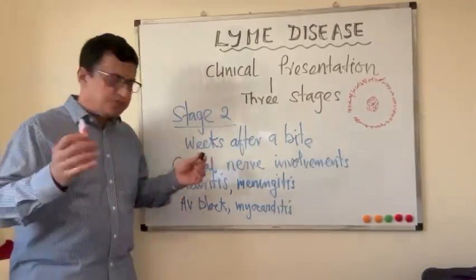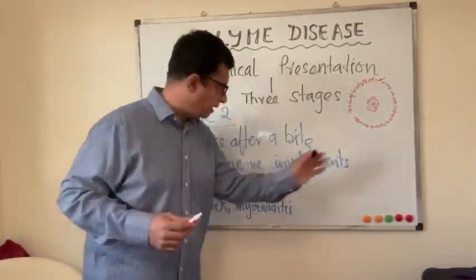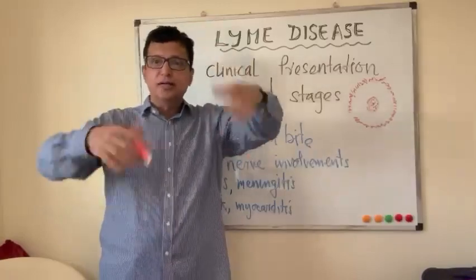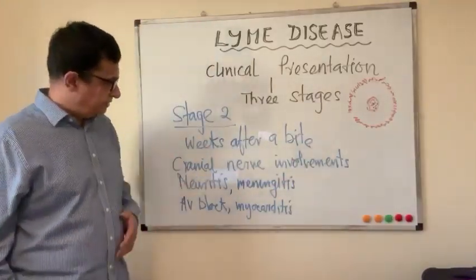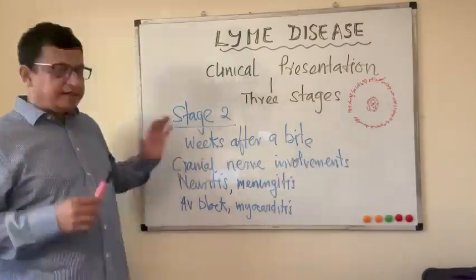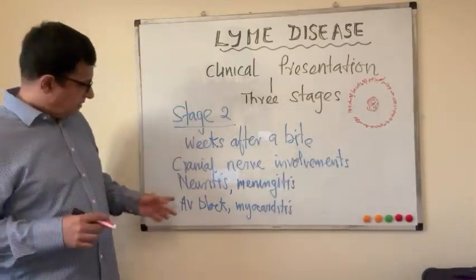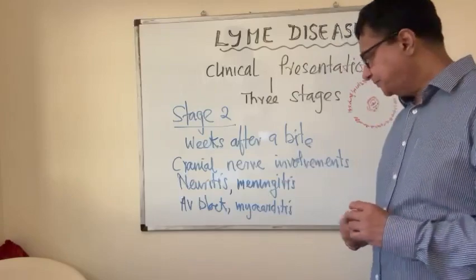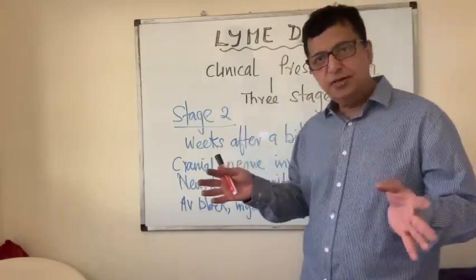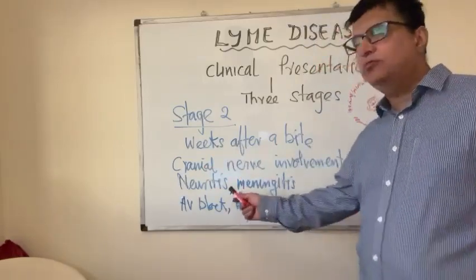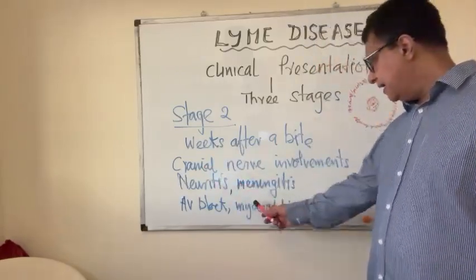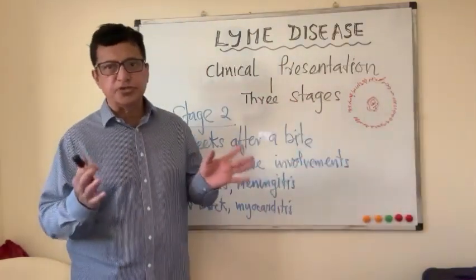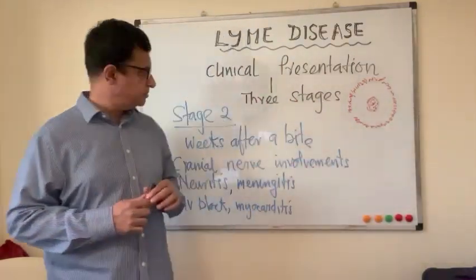Most Lyme disease cases disappear in the first stage, and some go into the second stage. The second stage happens weeks after the bite and involves cranial nerve complications such as Bell's palsy, neuritis, and meningitis. In North America, patients mostly develop heart blocks — first, second, or third degree — and can develop myocarditis, though cardiac presentations are not as common in European cases.